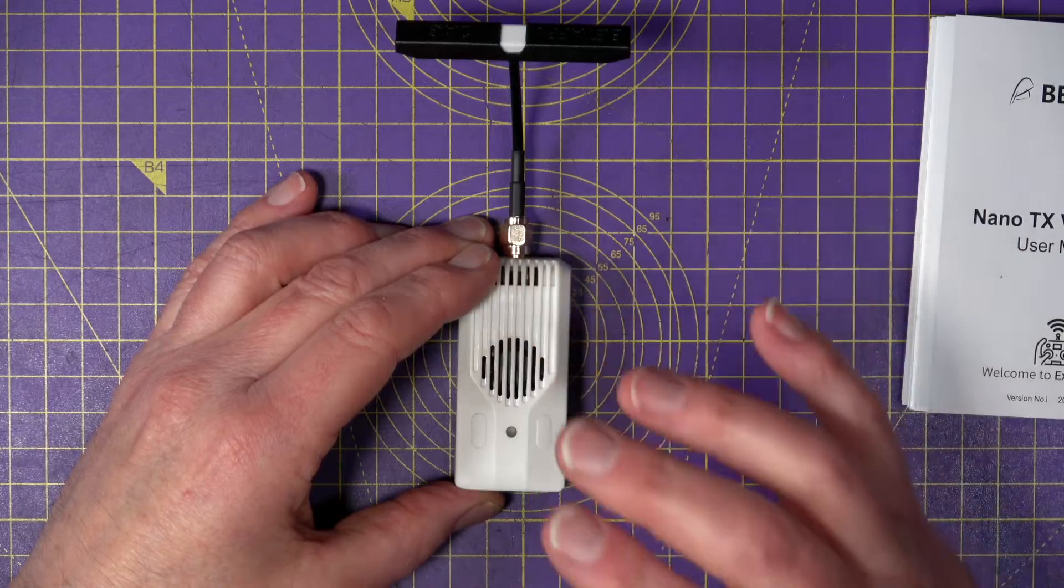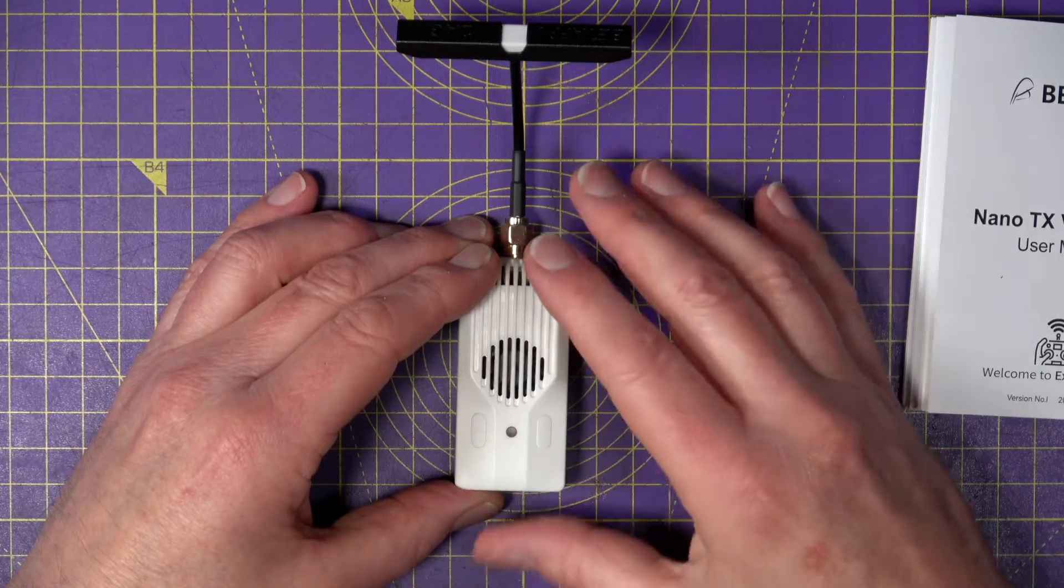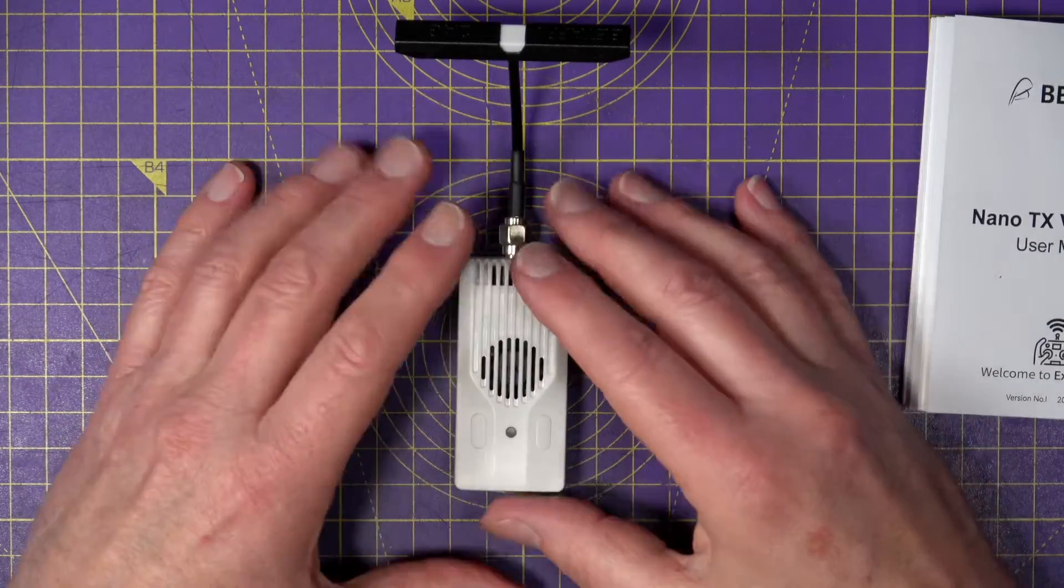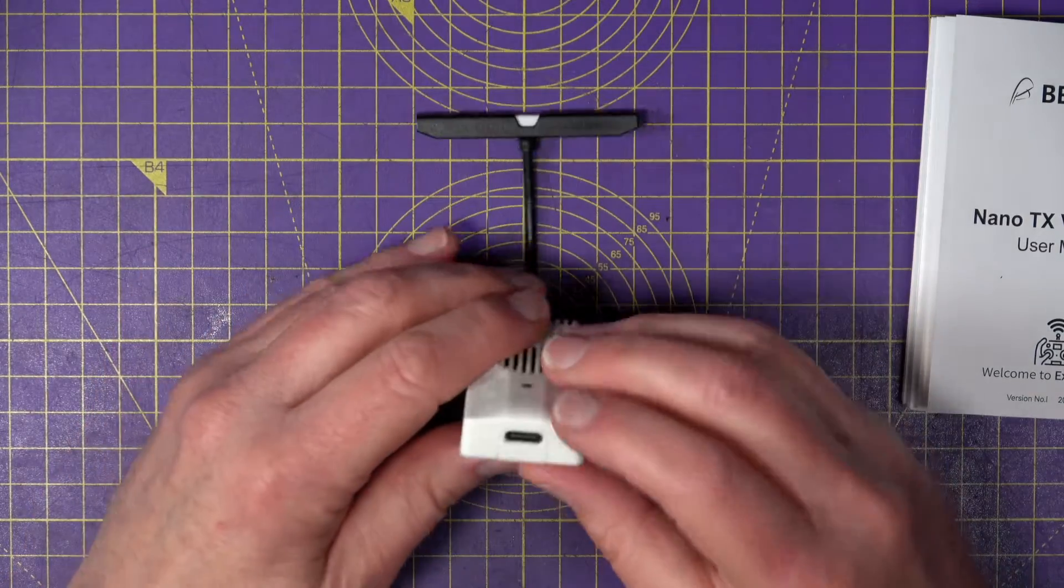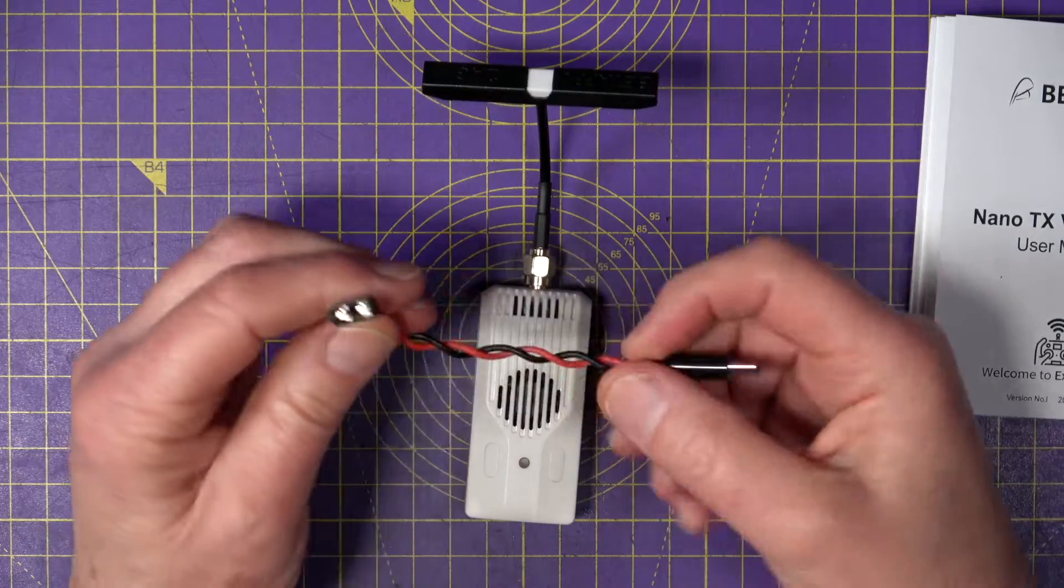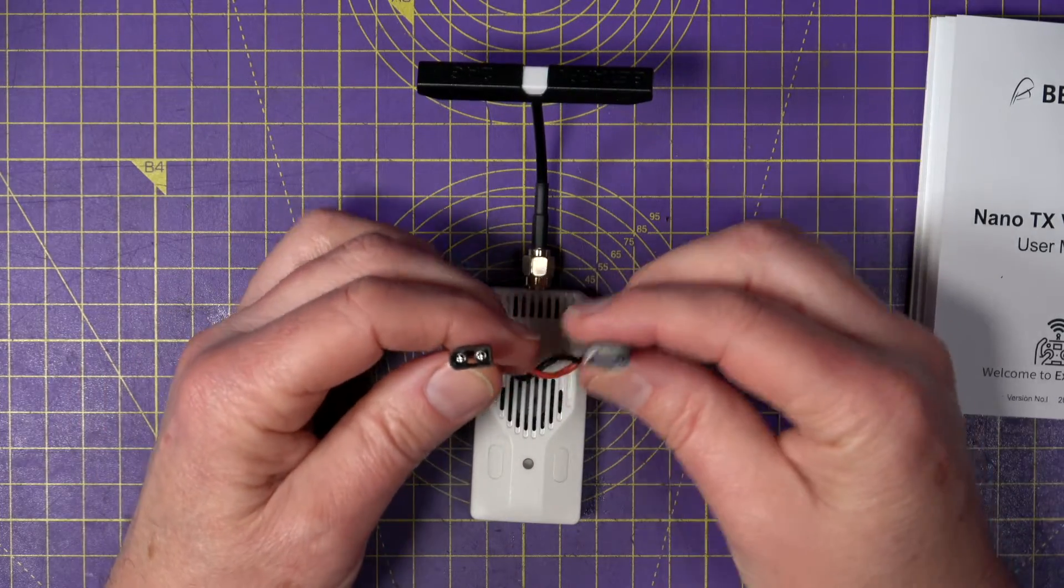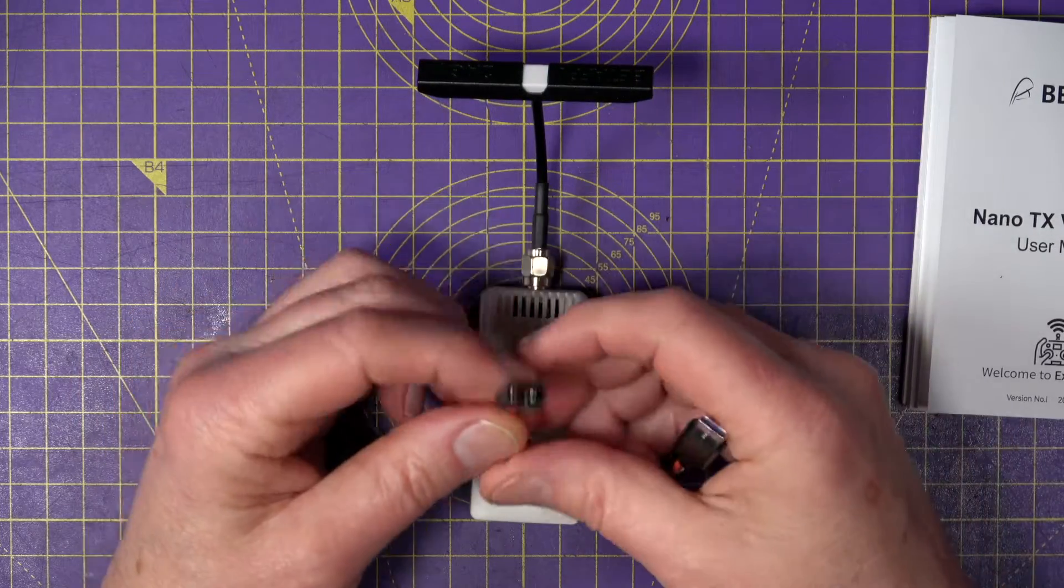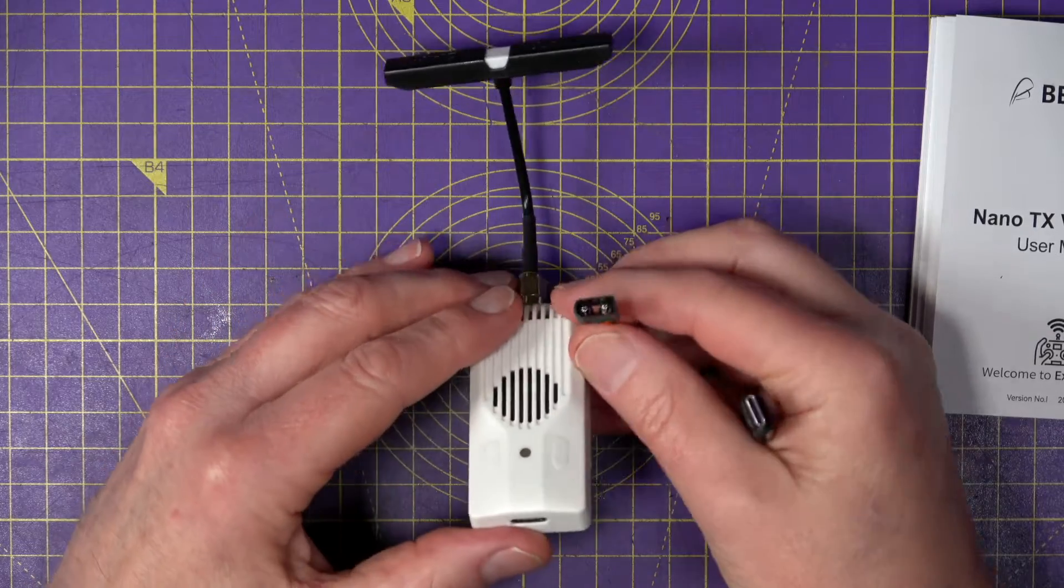Now these high RF power output modules can drain your transmitter batteries pretty quickly, but this has got a USB-C connector on the bottom, and using this supplied XT30 to USB-C connector cable, you can power this off an external 2 to 4s LiPo.